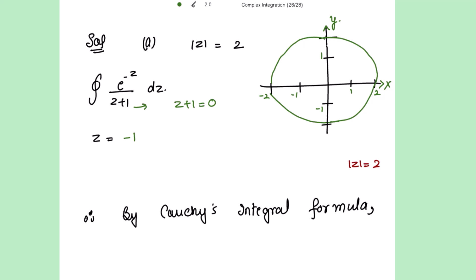Now check whether this point is lying inside the circle or not. As z is equal to x plus iota y, so here I can write this as negative 1 plus iota 0. So in polar coordinates, the point is minus 1, 0. So that is this point.